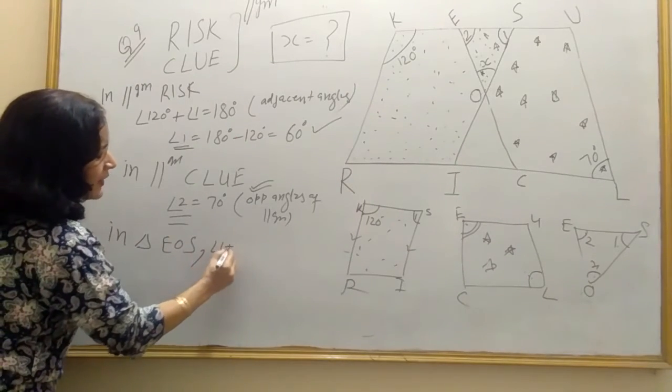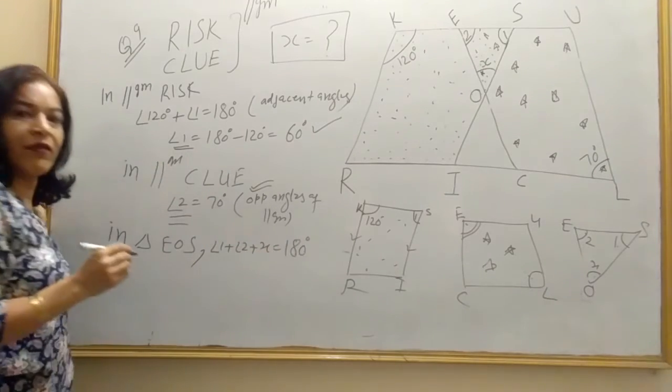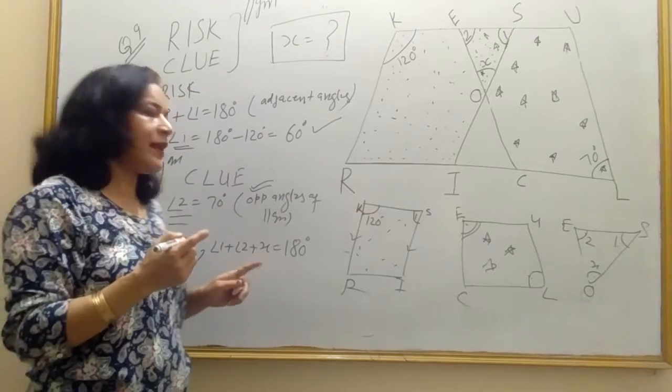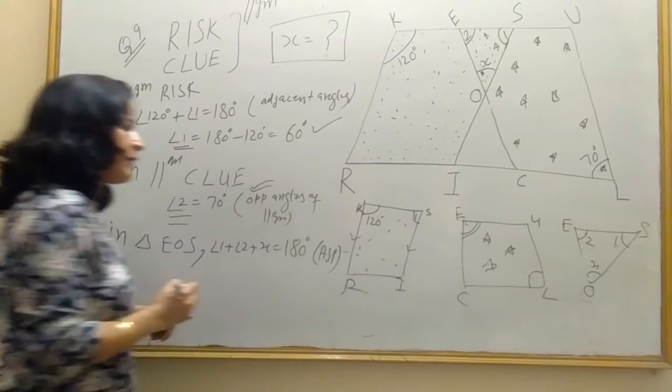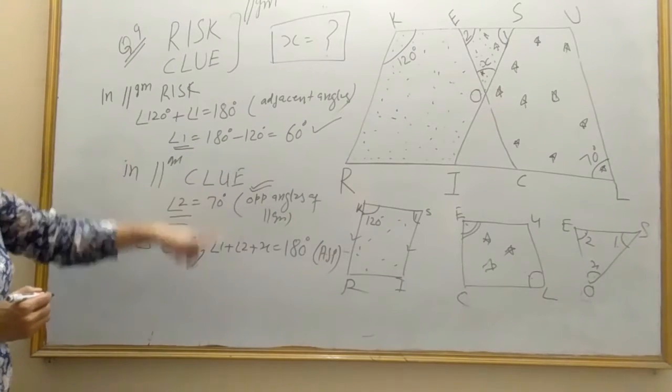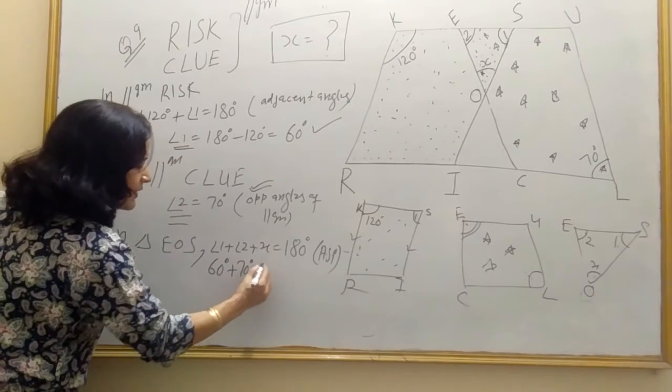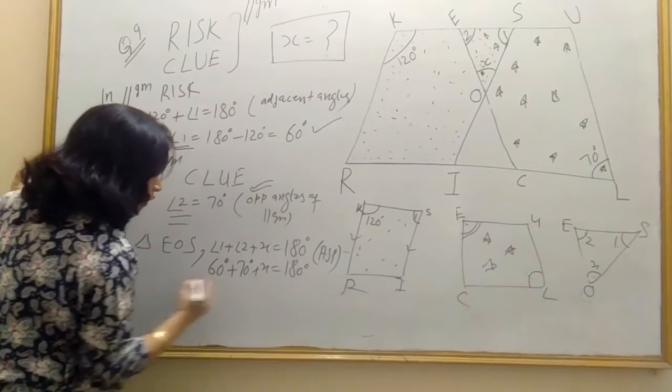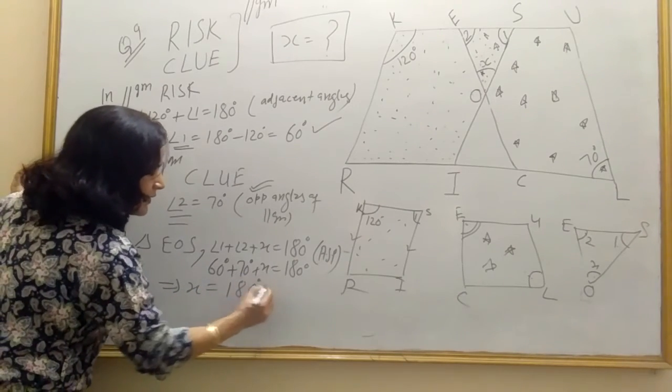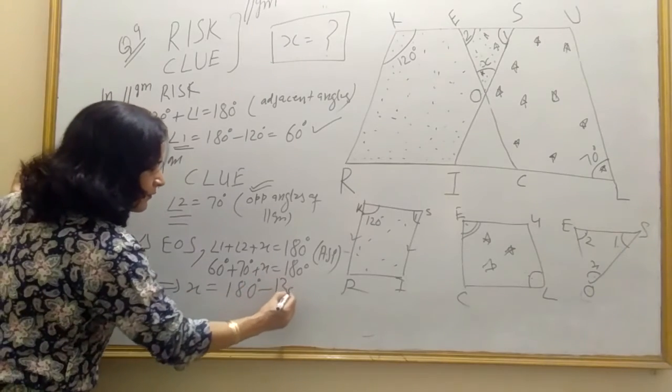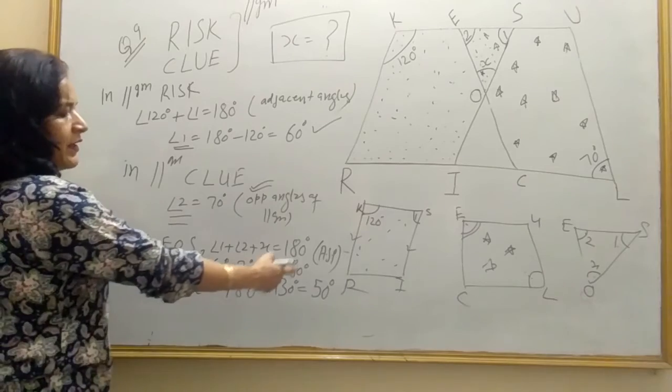So angle 1 plus angle 2 plus angle X, 180 degree. Why? Angle sum property, sum of 3 angles of triangle is 180 degree angle sum property. Angle 1 60, angle 2 70, so 60 degree plus 70 degree plus X is equal to 180, which implies X will be 180 degree minus 60 plus 70 is 130. So answer will be 50 degree.